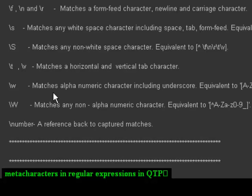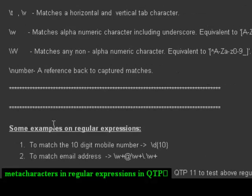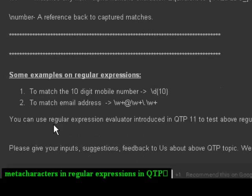To match any non-whitespace character, use \S. To match horizontal and vertical tab characters, use \t and \v. To match alphanumeric characters including underscore, use \w, and to match any non-alphanumeric character use \W. \1, \2, \3 can be used for back referencing of captured matches. This is how you can use the regular expression characters in QTP.